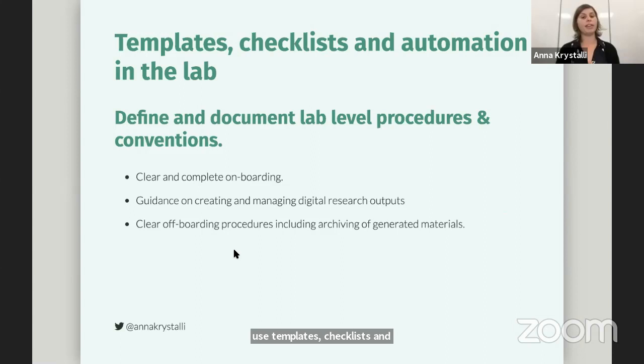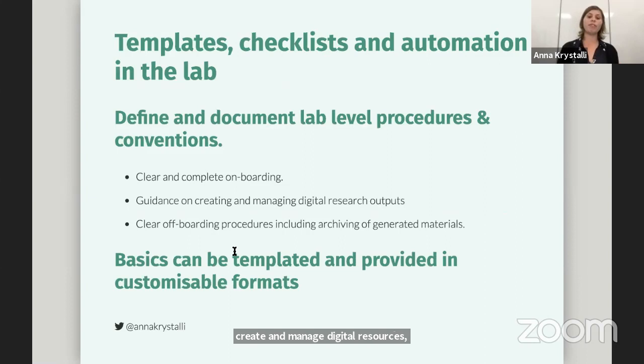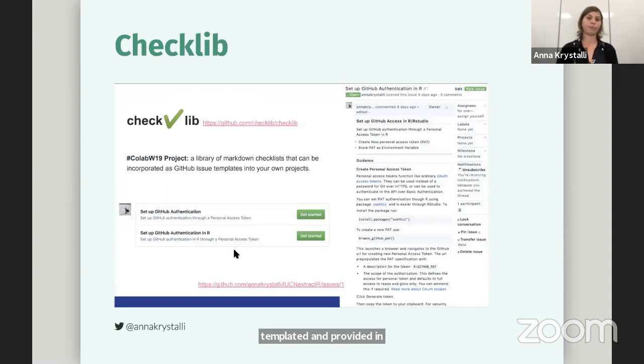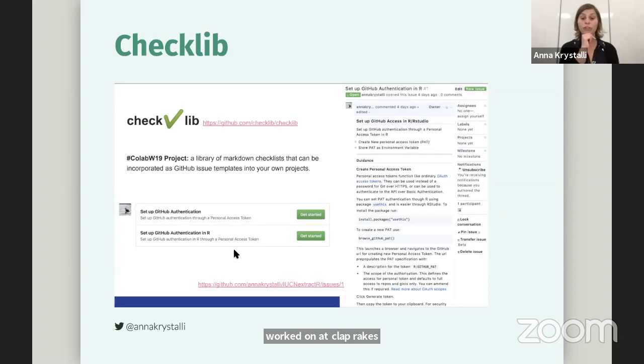Some of these basics can be templated and provided in customizable formats for labs themselves to build on. As an example, this was a project we worked on at Collaborations Workshop, where we tried to build a library of GitHub issue templates that other people could use and build on top of. On the future of reviewing: I've dreamed up a few scenarios of how reviews could look if people were publishing research compendia. In one example, someone found some small bugs or typos and just corrected them, leading to a more meaningful collaboration. If you make it easy for people to contribute, often they do — and I see these kinds of meaningful contributions all the time in rOpenSci reviews.